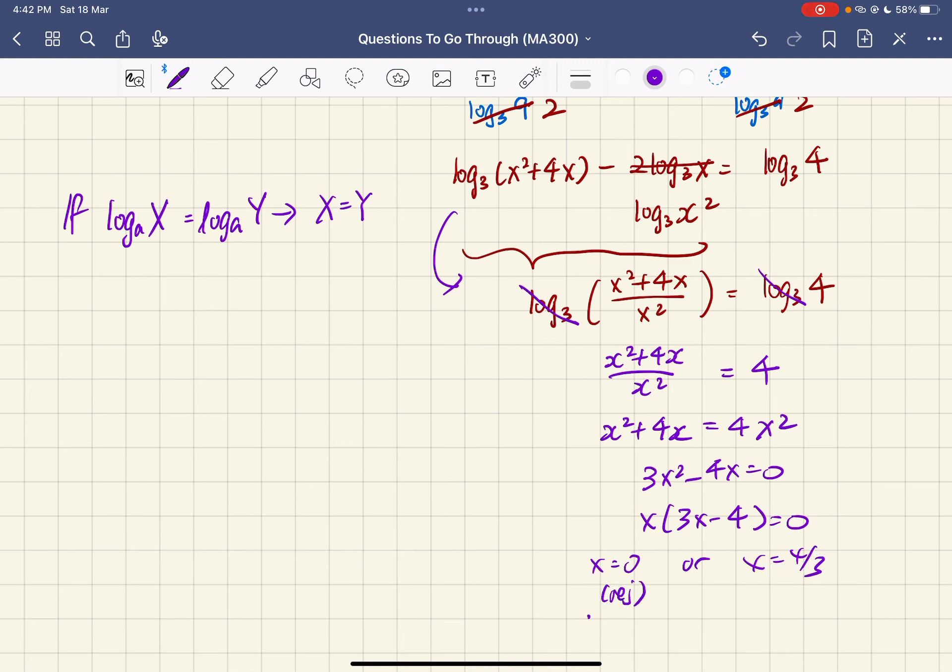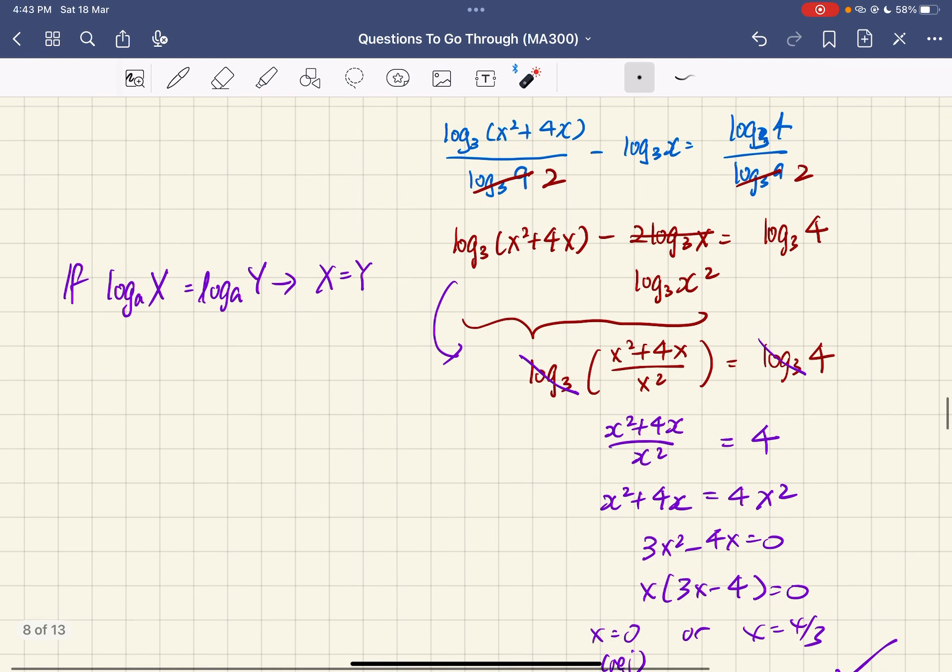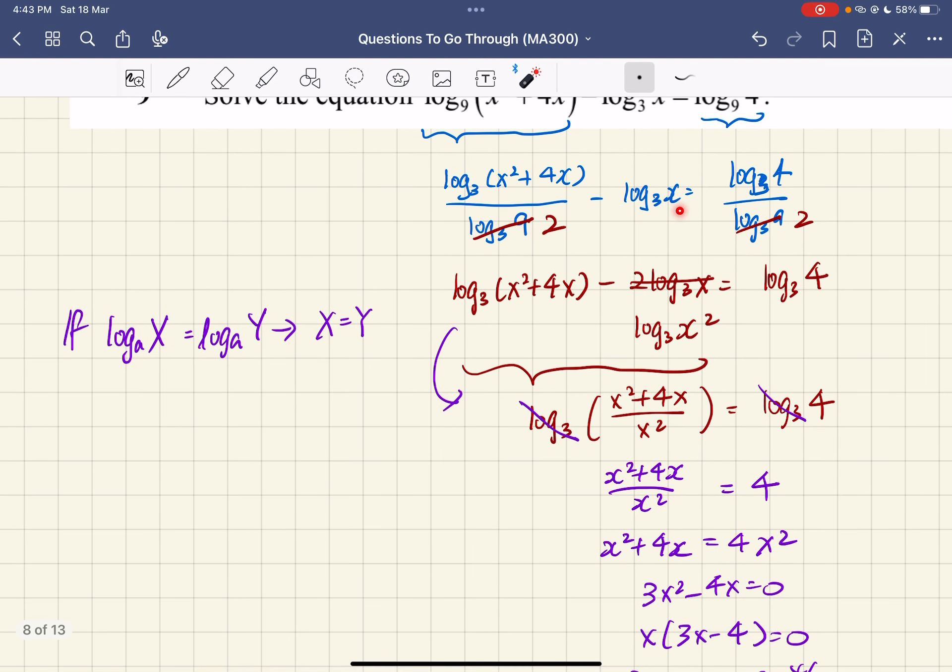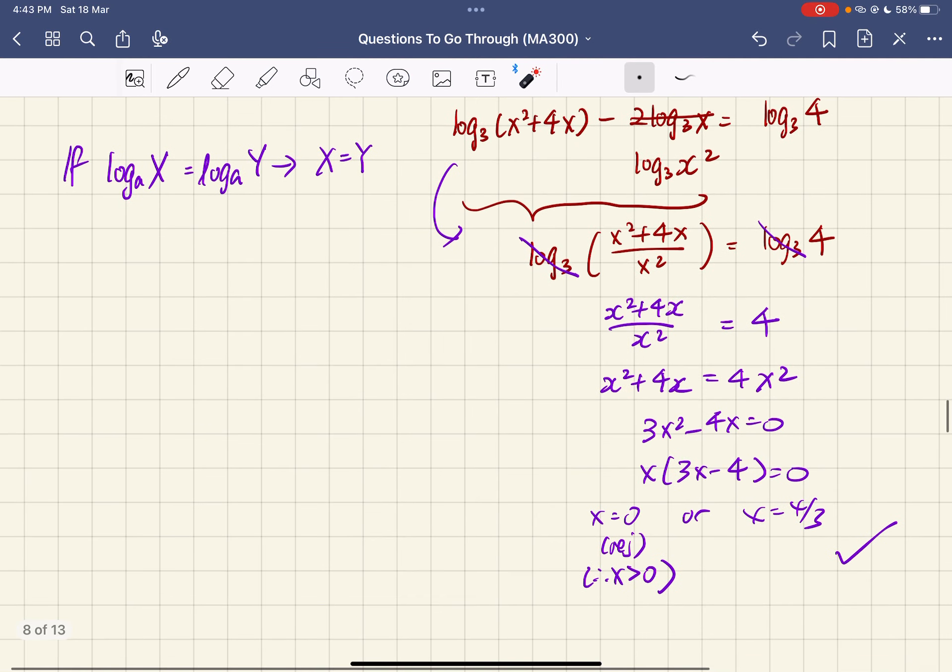Now we have to reject this, because we know that x has to be more than 0 by looking at this term. Log base 3 of x, your x cannot be 0, it has to be positive, otherwise you cannot fulfill the input of the logarithm. So we reject x equals 0, and the answer we take is x equals 4 over 3.